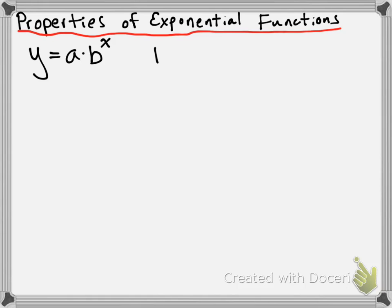First of all, the domain of an exponential function. The domain of all exponential functions — unless you're talking about a real-world scenario — is always going to be all real numbers. The idea is that you can substitute any x value into an exponential function and you should be able to get a y value associated with it.